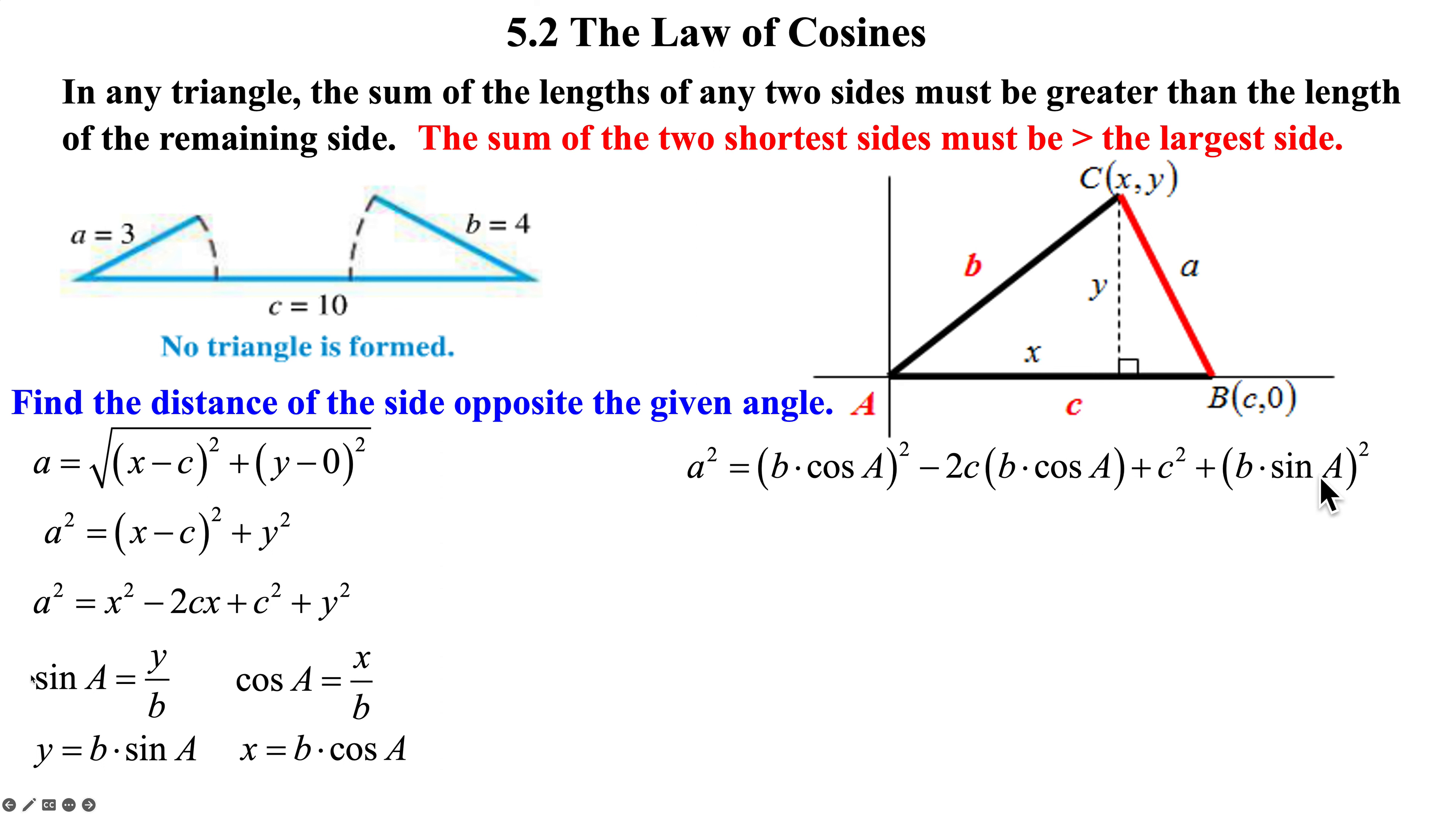And wait a minute, cosine squared, sine squared being added. I'm thinking Pythagorean theorem. Okay, I'm simplifying. I got it. You know what I need to do is I need to bring this B squared sine squared A. I need to move it over here. Okay, because as soon as I see a cosine squared and a sine squared being added together, I'm thinking that's going to be a 1.